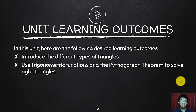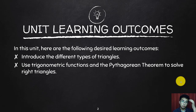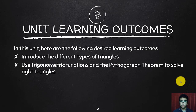Our learning outcomes will be the following: we need to introduce the different types of triangles, and we need to use the trigonometric functions and the Pythagorean theorem to solve right triangles. Those are our main goals for this lecture.